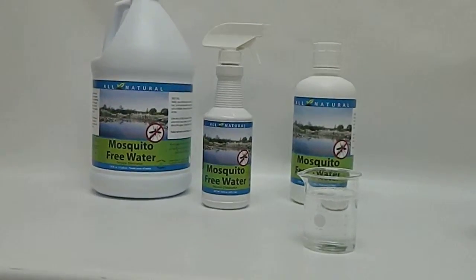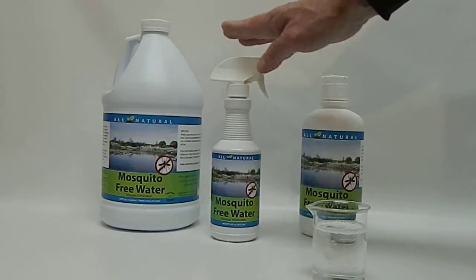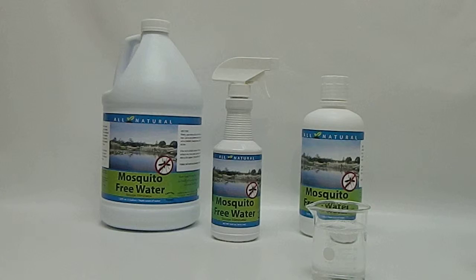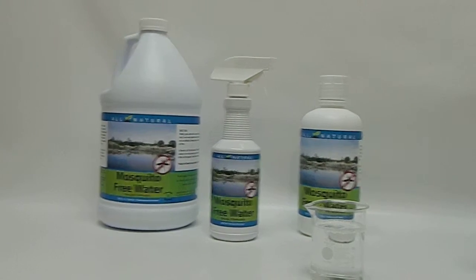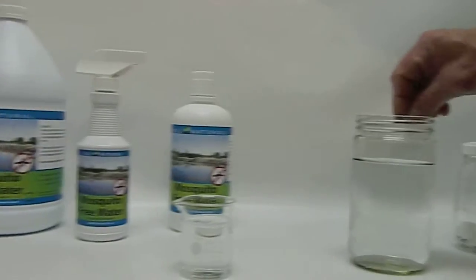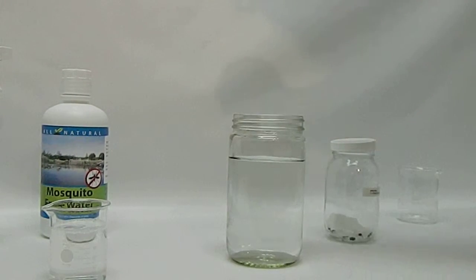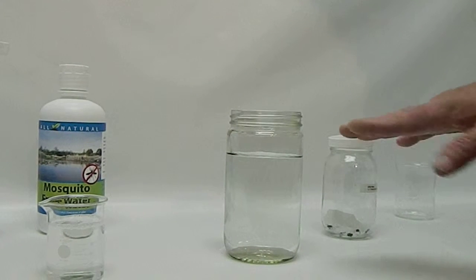The mosquito-free water, again, is designed, can be sprayed topically. The smaller bottle is great for bird baths, fountains, small little ponds, bigger bodies of water. It works quite simply as this. The mosquito or any type of insect can no longer land on the water, it actually falls through. By not being able to land, it can't deposit its eggs.